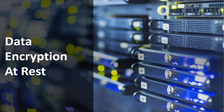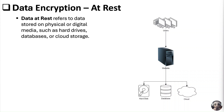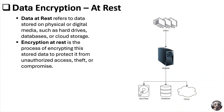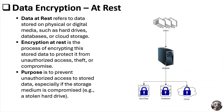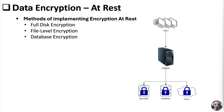Let's first understand data at rest to better understand what it is trying to protect. Data at rest refers to data stored on physical or digital media, such as hard drives, databases, or cloud storage. Encryption at rest is the process of encrypting this stored data to protect it from unauthorized access, theft, or compromise. The primary goal is to prevent unauthorized access to stored data, especially if the storage medium is compromised — for example, a stolen hard drive or laptop. There are a number of ways it can be implemented, and most modern systems use all or more than one of these methods to deliver a robust solution.